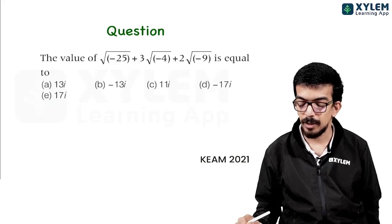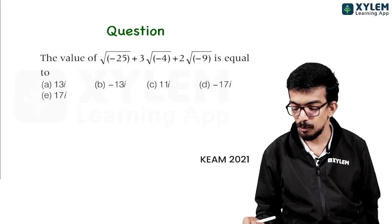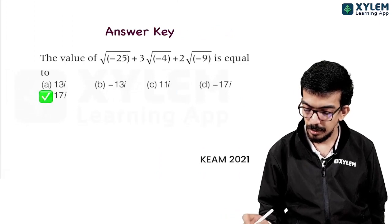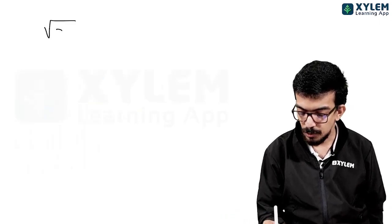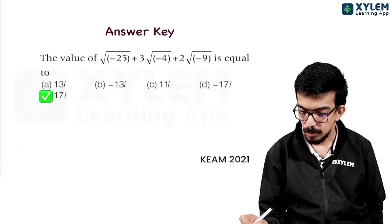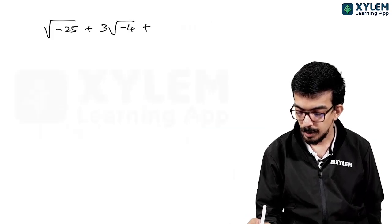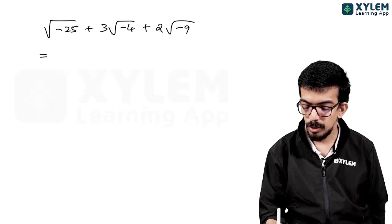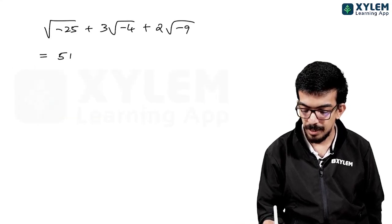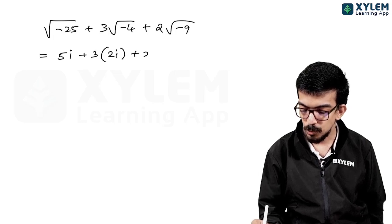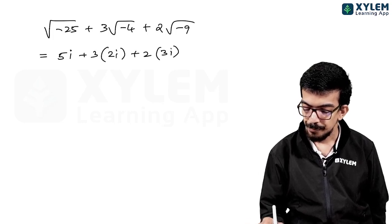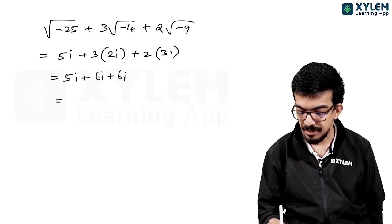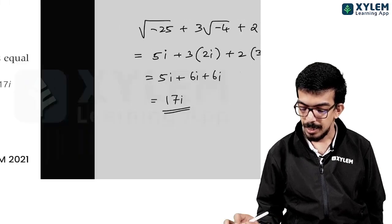Next: the value of √(−25) + 3√(−4) + 2√(−9). Simplify: √(−25) = 5i, 3√(−4) = 3×2i = 6i, 2√(−9) = 2×3i = 6i. So 5i + 6i + 6i = 17i.